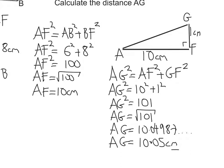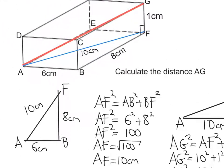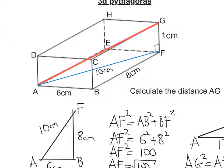So, to work out AG, we had to first work out what the diagonal was across the bottom using Pythagoras, and then using that length, use Pythagoras again to work out AG, which was 10.05 centimetres.